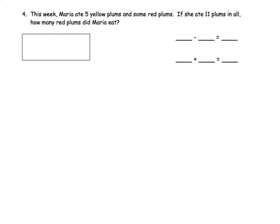We are going to start with our number sentence which is 11 plums in all minus the five yellow plums that she ate will tell us how many red plums.